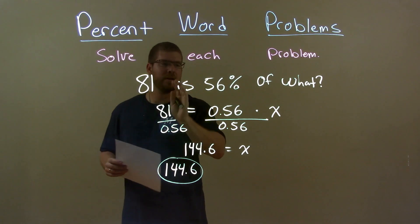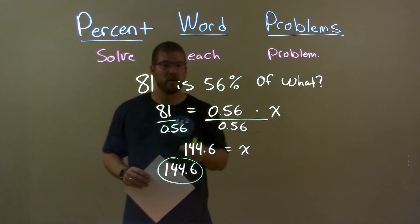So quick recap. We're given 81 is 56% of what? We wrote this as an equation.